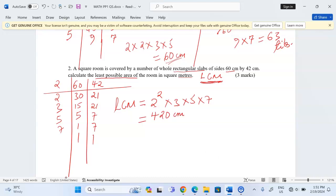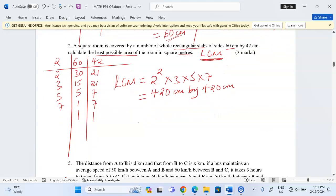So the dimension of the room is 420 by 420 since it is a square room. Therefore, with the dimensions of the room, we can talk about the least possible area of the room. This means that the room measures 4.2 meters by 4.2 meters. Because according to the question, we're supposed to get the area in square meters. Therefore, 4.2 times 4.2 gives us 17.64 square meters.